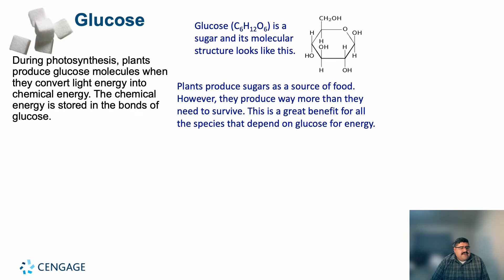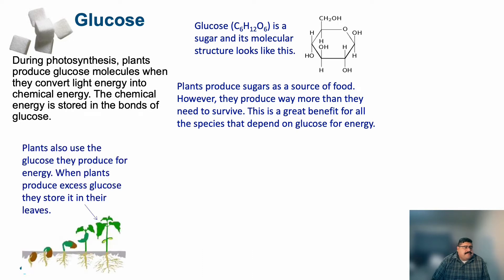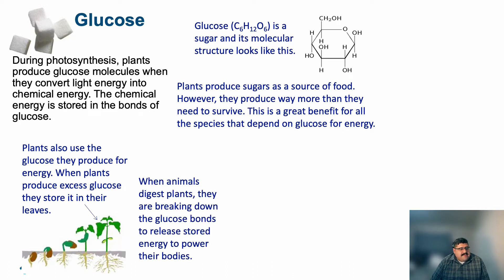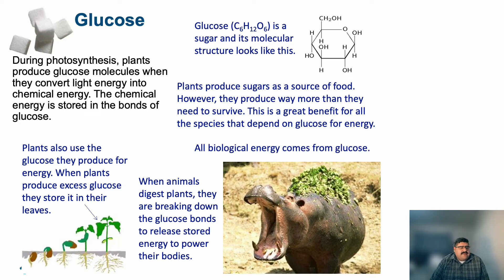During photosynthesis, plants produce glucose molecules when they convert light energy into chemical energy; the chemical energy is stored in the bonds of the glucose molecules. Plants produce sugars as a source of food, but they produce way more than they actually need to survive — this is a great benefit for all species that depend on glucose for energy. Plants store excess glucose in their leaves, and when animals digest plants, they break down the glucose bonds to store energy in their own bodies.